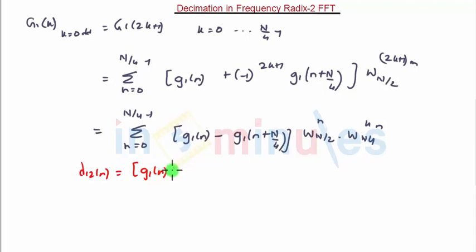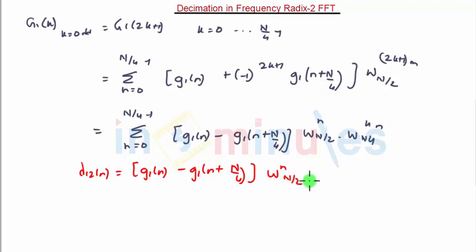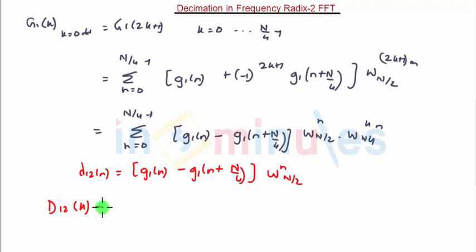We define d12(n) = [g1(n) minus g1(n + N/4)] times W_(N/2)^n. Then d12(k) is the N/4-point DFT of d12(n), so d12(k) equals summation n equals 0 to N/4 minus 1 of d12(n) times W_(N/4)^(kn).